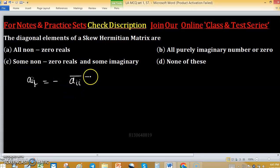And I took conjugate for a skew Hermitian matrix. So Aii equals to minus of Aii conjugate. This is the condition for skew Hermitian.